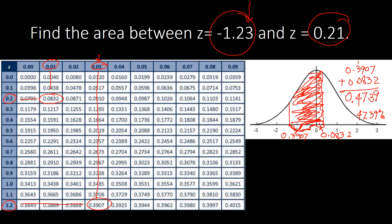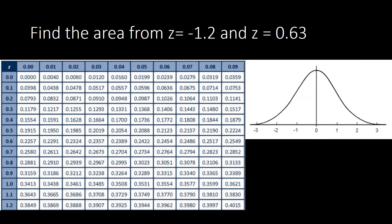That is how you find the area between two z values which don't include a value equal to 0 — meaning two non-zero z values. Now let's move on to the next example. We have: find the area from z equal to negative 1.2 and z equal to 0.63. How do we look for the area in that one?